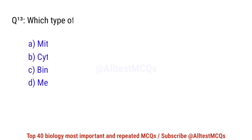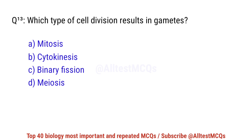Question number 13. Which type of cell division results in gametes? The right option is D: Meiosis.